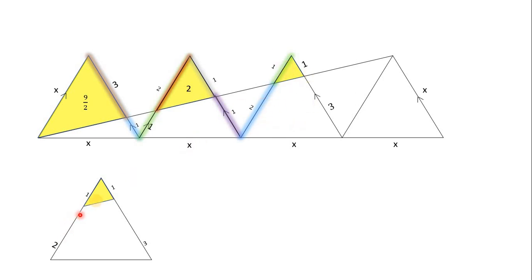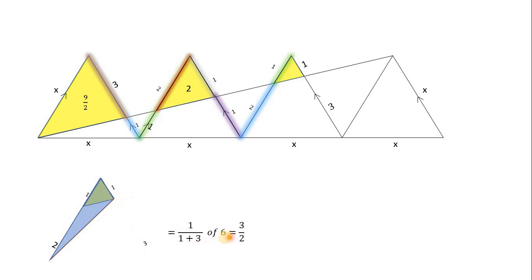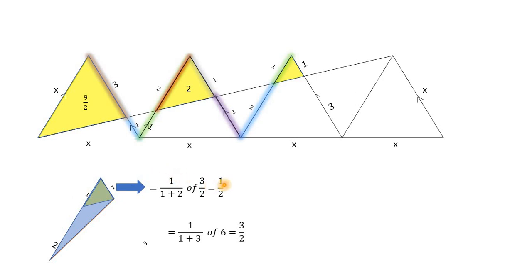For the third and last triangle, the ratio is 1:3. Joining a line, the area of that sub-triangle is 1/(1+3) of 6, which is 1/4 of 6 = 3/2. From this, since the ratio is 1:2, we get 1/(1+2) of 3/2, which equals 1/2. So the smallest yellow shaded region has area 1/2.